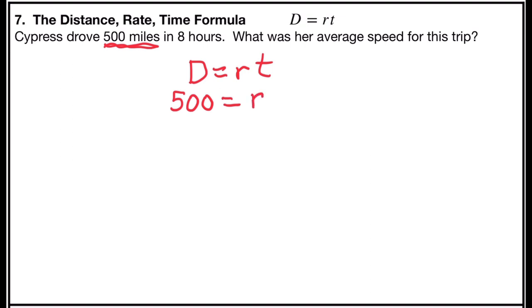The rate is what we're looking for, and the time, it tells us it took her eight hours to drive the 500 miles. So we'll just simplify a little bit. 500 equals r times 8 is 8r,